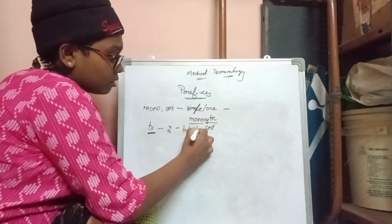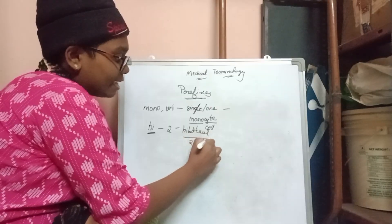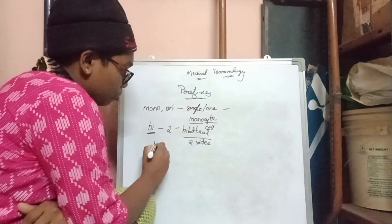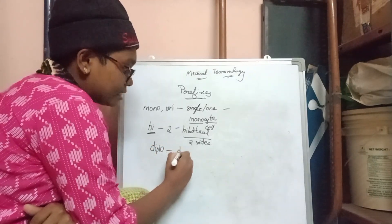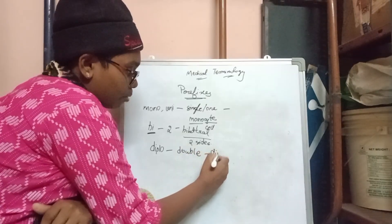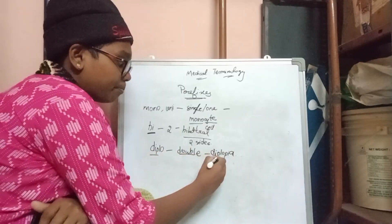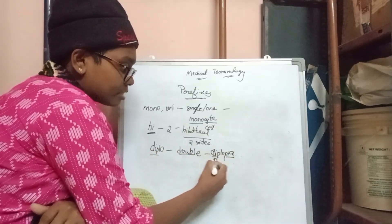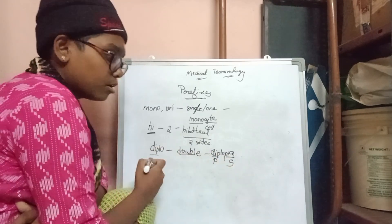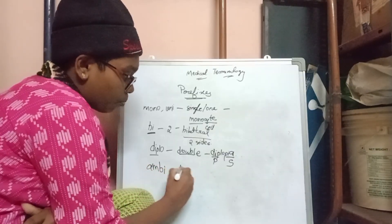Bi means two, as in 'bilateral,' which means two sides. The next prefix is 'diplo,' which means double — for example, 'diplopia.' Then 'ambi' means both, as in 'ambidextrous.'